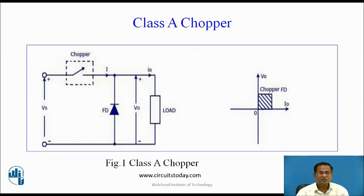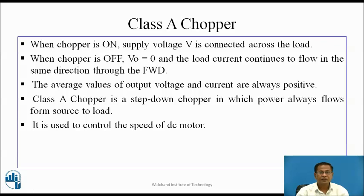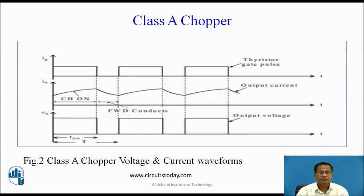During T-off, when the chopper switch turns off, the freewheeling diode conducts; the direction of current remains the same and the load voltage is zero — the chopper still operates in the first quadrant. The average value of output voltage and current are always positive. Class A chopper is the step-down chopper in which power always flows from source to load. It is used to control the speed of the DC motor.